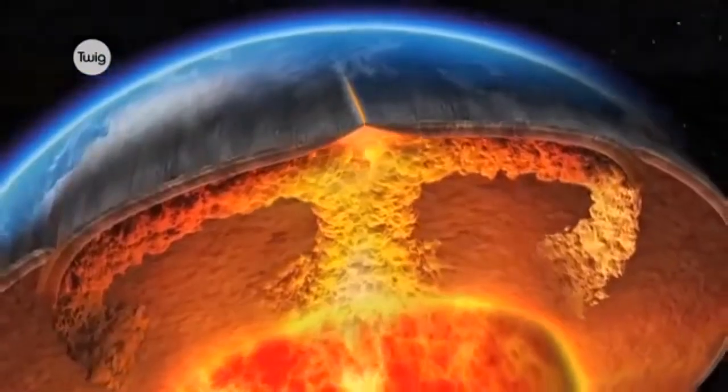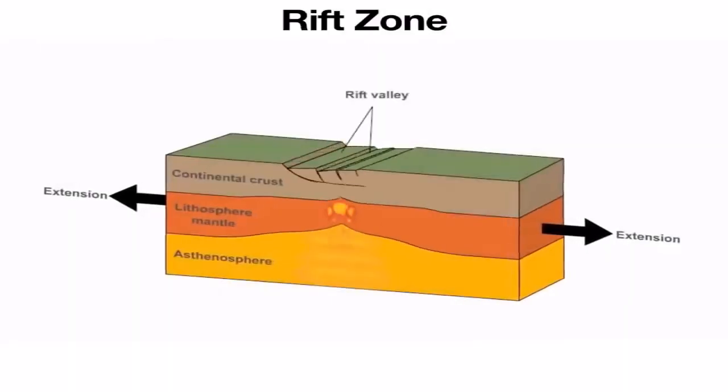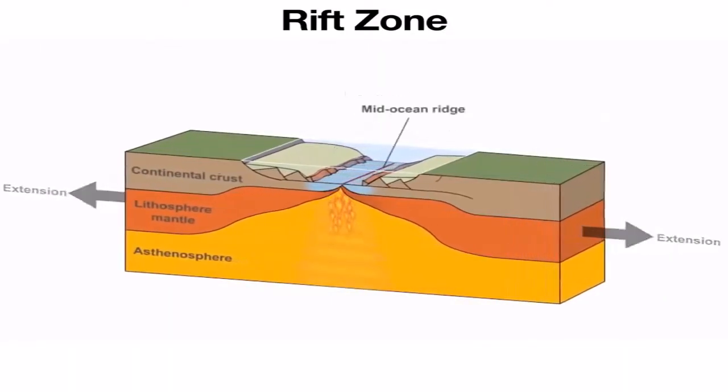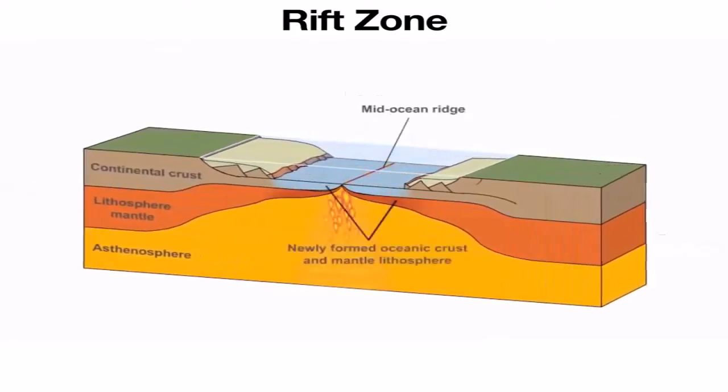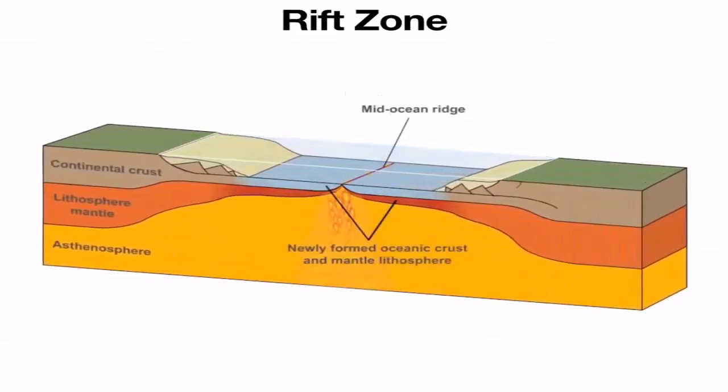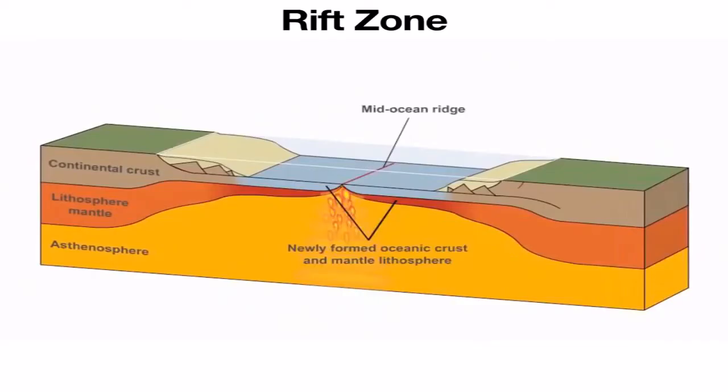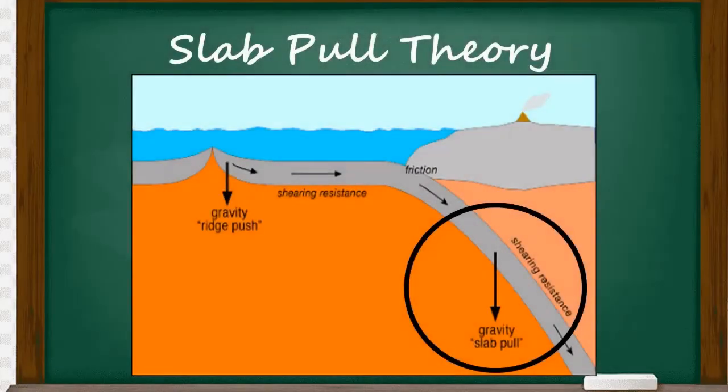The convection currents push the magma up, forming new crust and exerting a lateral force on the plate and pushing it apart to create seafloor spreading. The second theory is called the slab pull theory.